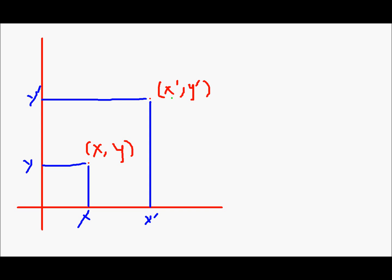I obtain the new location x', y' by adding this distance to x and this distance to the old y. We will call this distance tx and this distance ty. So we translated x, y to x', y' by adding tx to x and ty to y.